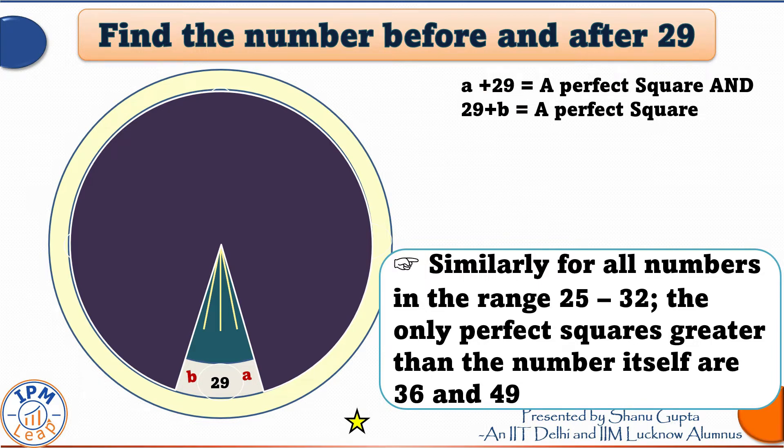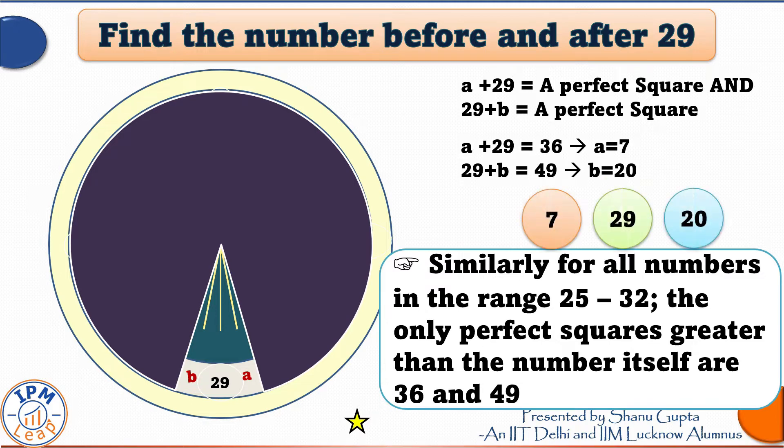So in a similar calculation, if I want to see the two numbers before and after 29, needless to remind you that the only perfect squares greater than 29 are 36 and 49. I take a plus 29 is equal to 36. This gives me a is equal to 7. And 29 plus B is equal to 49. This gives me B is equal to 20. So the triplet 7, 29 and 20 certainly finds a place in this circle.